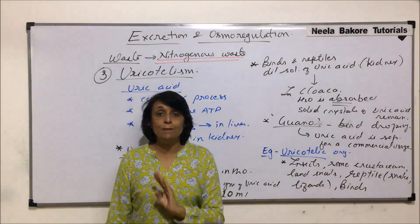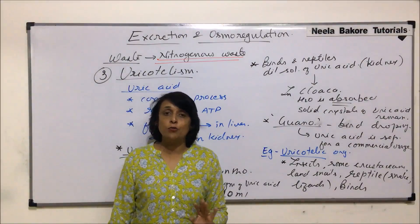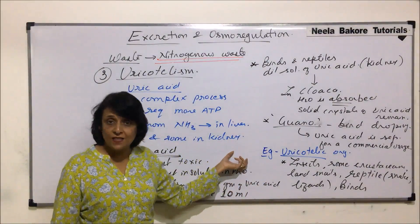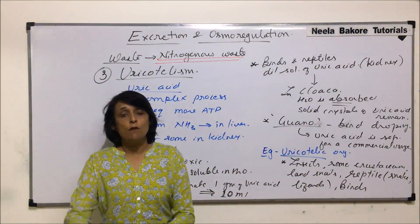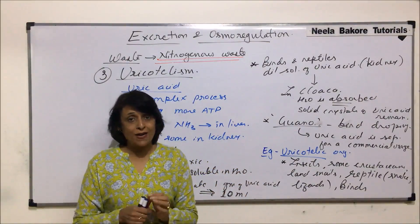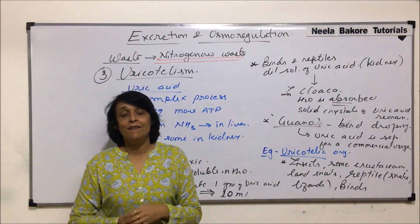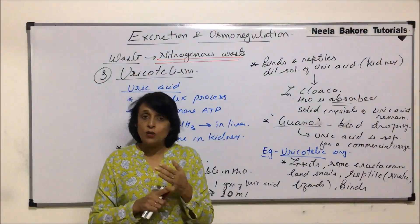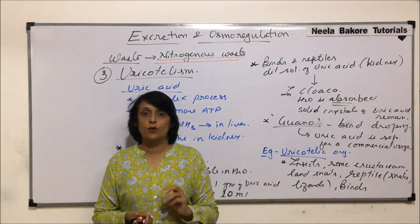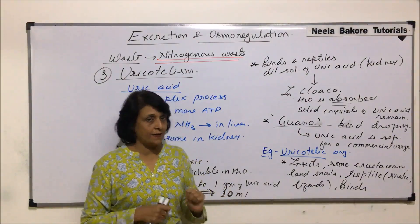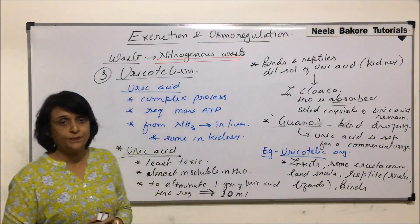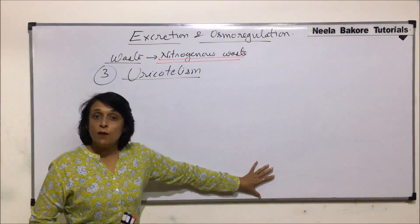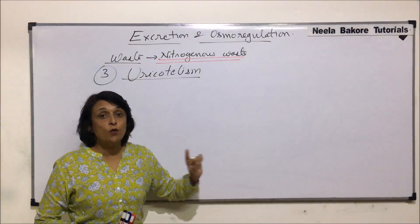So those are the three main important nitrogenous waste materials and that is how we classify organisms. We will now talk about one more category called aminotelism, aminotelic organisms, and some more nitrogenous wastes.